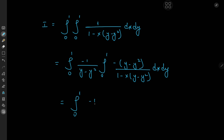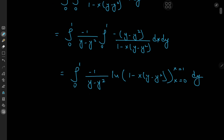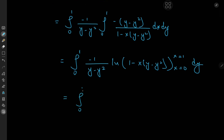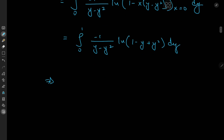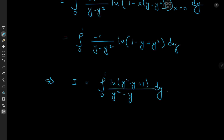So we have the integral from 0 to 1 of negative 1 divided by y minus y squared times the logarithm of 1 minus x times y minus y squared, evaluated with the limits for the x variable being 0 and 1, dy. Evaluating these limits: as x approaches 1 we have 1 minus y plus y squared, and as x approaches 0 we have log 1 which is 0. So the target integral I equals the integral from 0 to 1 of log of y squared minus y plus 1 divided by y squared minus y, dy.